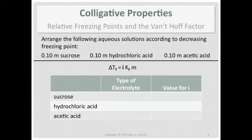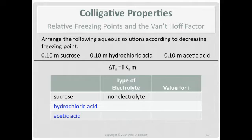Let's figure out appropriate values for i for all three solutions. We'll start with sucrose. In the previous podcast we talked about how sucrose is a non-electrolyte. The other two — think back to chem one — we talked about acids in the chapter where we did metathesis reactions, and we also talked about conductivity of acids. Both of these are electrolytes because they do produce ions in solution.